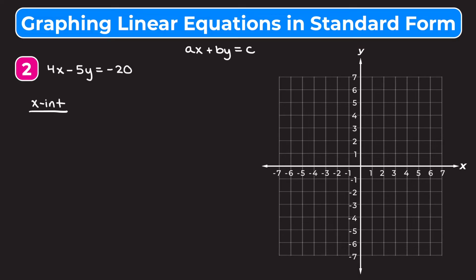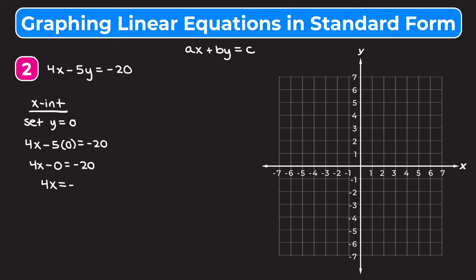For the x intercept we set y equal to 0. So we have 4 times x minus 5 times 0 equals negative 20. That simplifies to 4x equals negative 20. Dividing both sides by 4 gives an x intercept of negative 5. We go to the graph and plot negative 5 on the x axis.